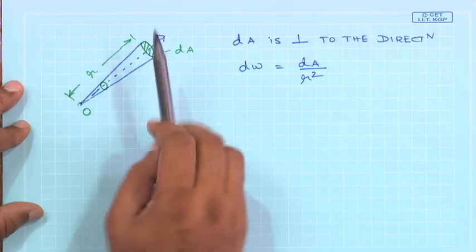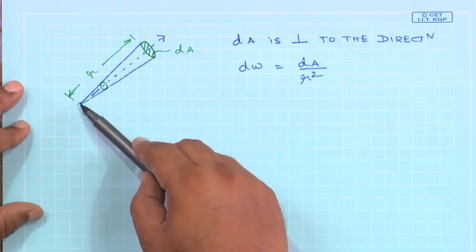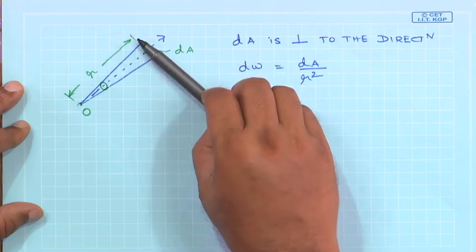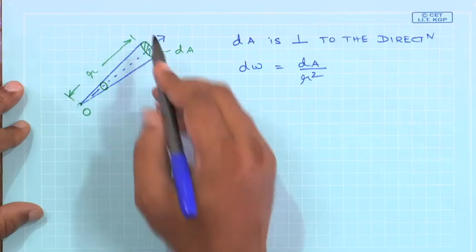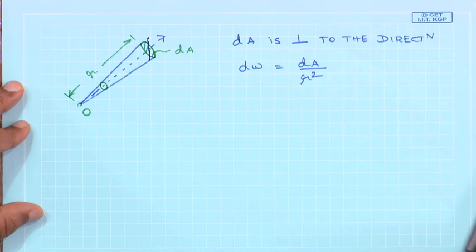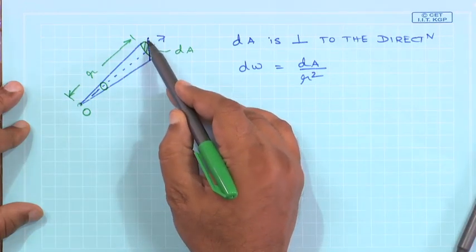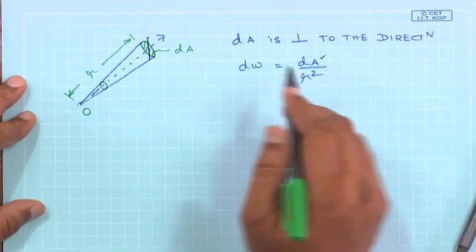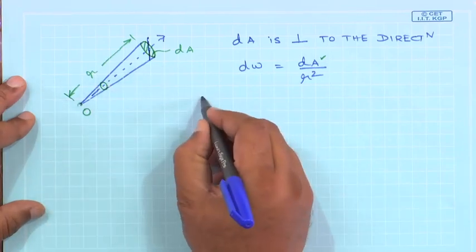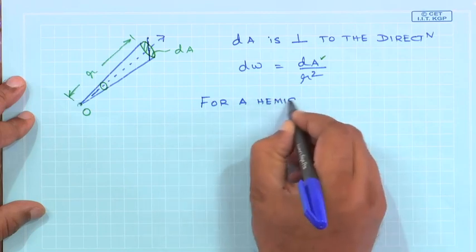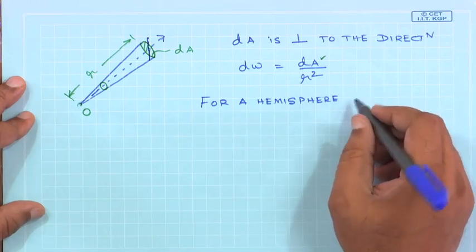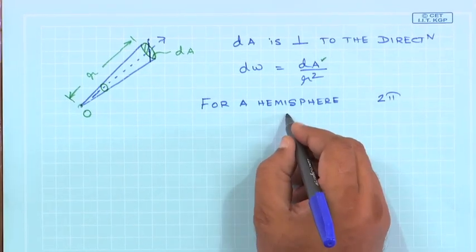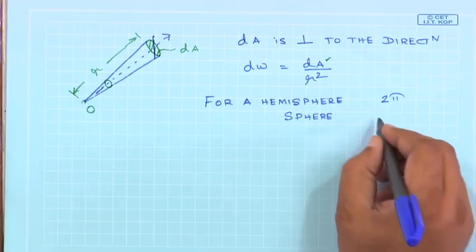If the area is not perpendicular to the line from the origin specifying the direction, then the projection of the area perpendicular to that direction must be used — that is, d A must be replaced by d A cos(theta). For a hemisphere, the solid angle from its center is simply 2π, and for a full sphere it is 4π.